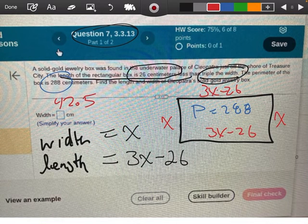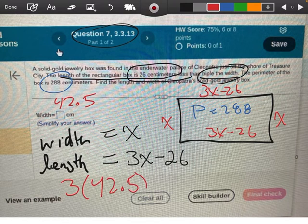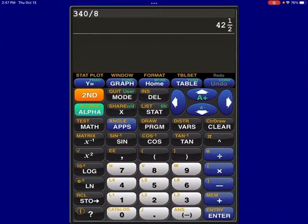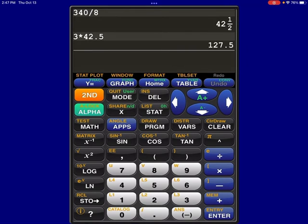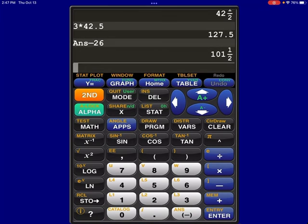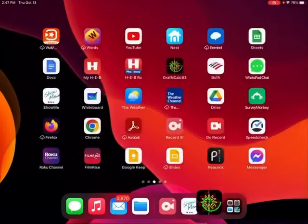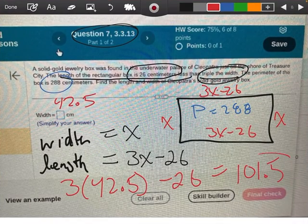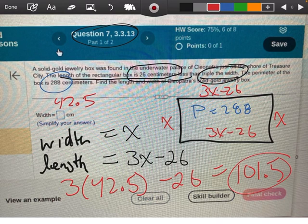Now, if we want to find the length, we're going to take 3 times 42.5, and then minus 26. So let me take my calculator again. I'm going to take 3 times 42.5, and then subtract 26, and I'm coming up with 101.5. That's going to be my length. So we found our length. If you got any questions, let me know.